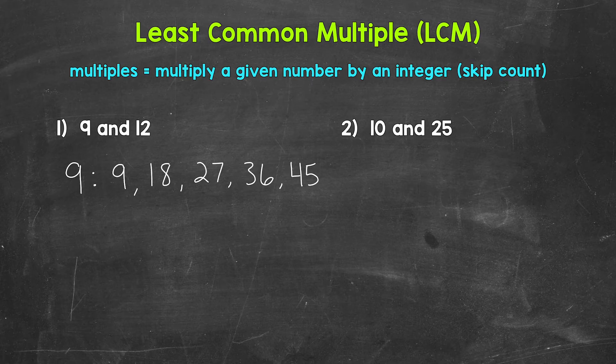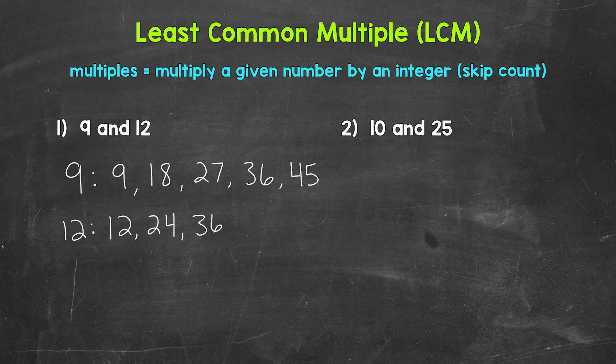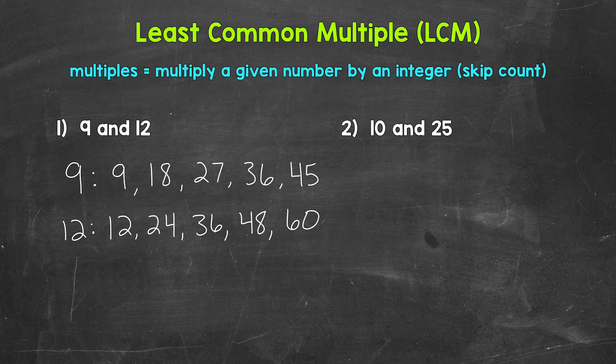Now let's list the first 5 multiples of 12. 12 times 1 is 12. 12 times 2 is 24. 12 times 3 is 36. 12 times 4 is 48. And 12 times 5 is 60. So again, you can see that we skip counted there. We skip counted by 12.